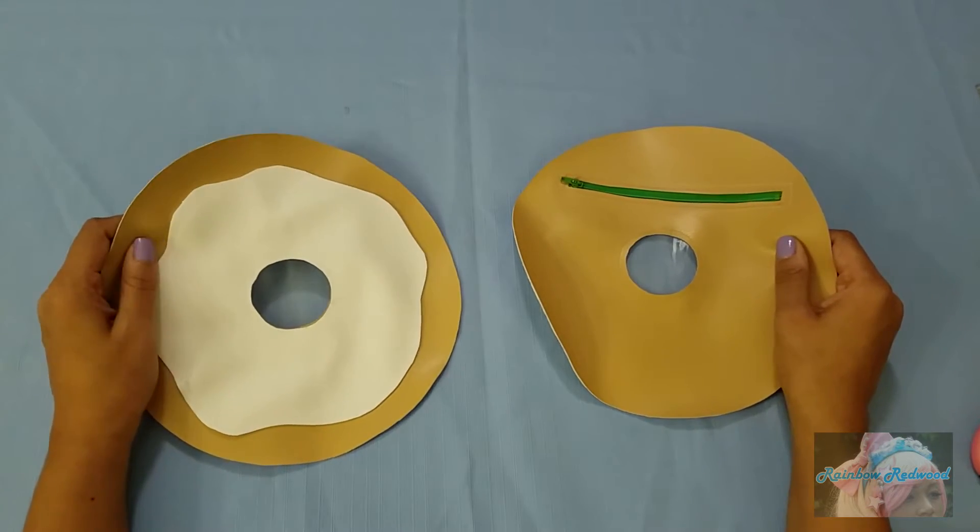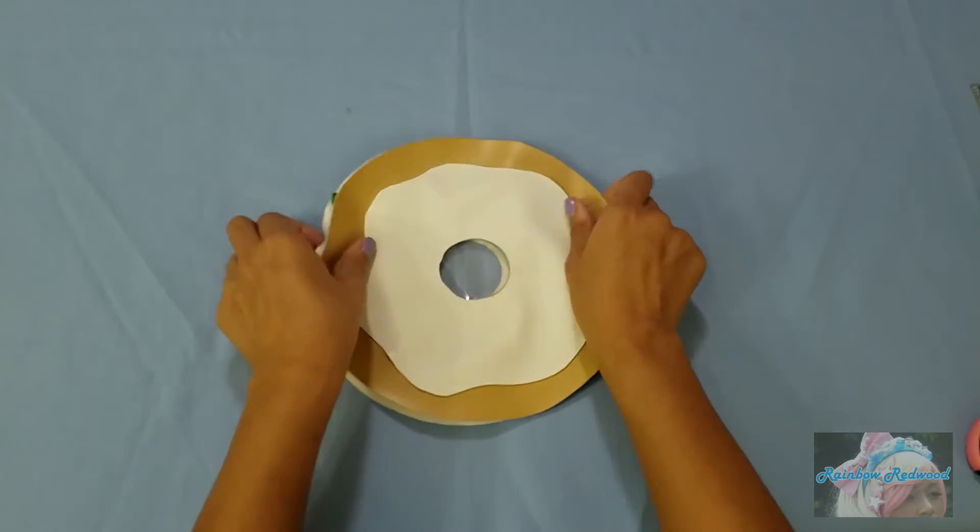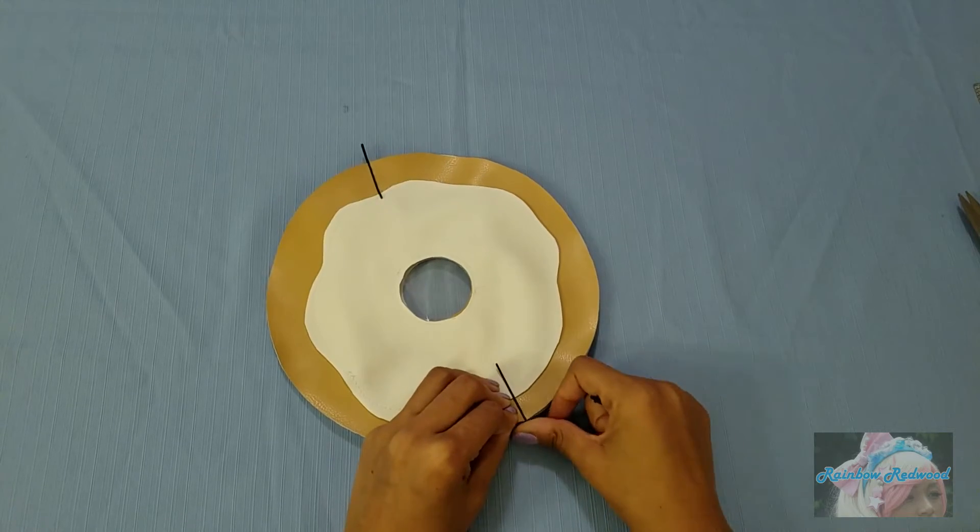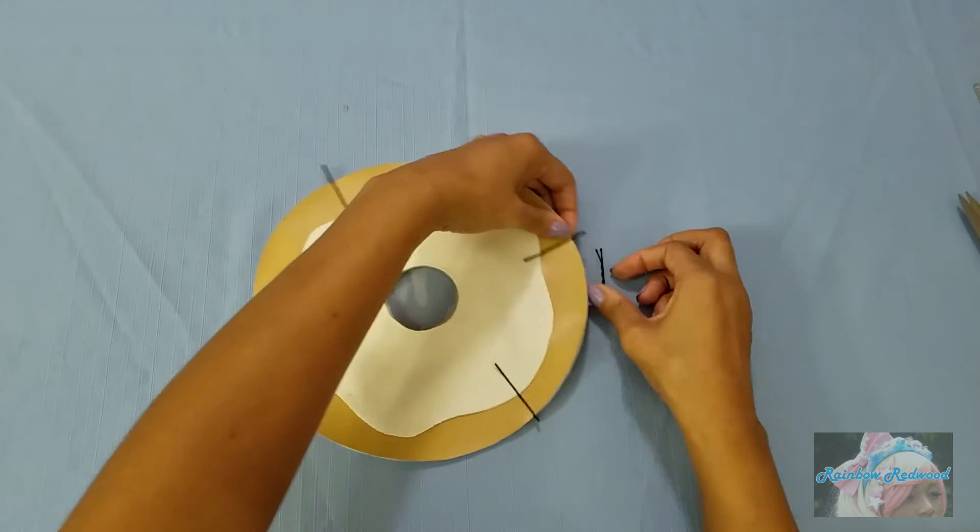So now we're going to take the front piece and the back piece and put them together wrong sides together. So you can use clips or closed hair pins like I'm just showing you right here.